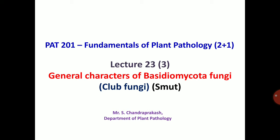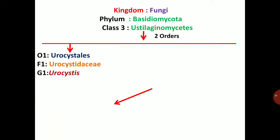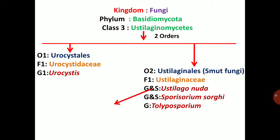In this class, we have smut fungi about general characters and also general characters of Exobasidium vexans that is the Tea Blister Blight pathogen. First of all, classification: Kingdom Fungi, Phylum Basidiomycota, Class 3 — Ustilaginomycetes. There are two orders: first one is Urocystales, family Urocystidaceae, genus Urocystis. Second order is Ustilaginales, which contains smut fungi, family Ustilaginaceae. There are several important genera: Ustilago, Sporisorium sorghi, Tolyposporium, etc.